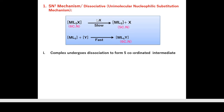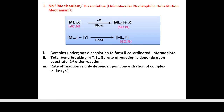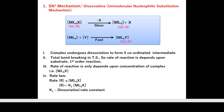In SN1 mechanism, total bond breaking occurs in the transition state. The rate of reaction depends only on the substrate (the complex), making it a first-order reaction. Rate = k₁[ML₅X], where k₁ is the dissociation rate constant.